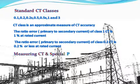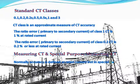Difference between measuring CT and special purpose measuring CT: normally accuracy is defined at rated current, but in special purpose CT, accuracy is defined at 20% of rated current.